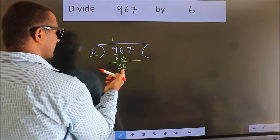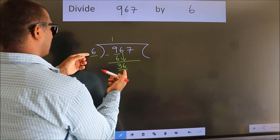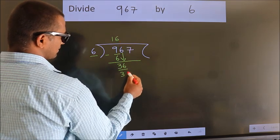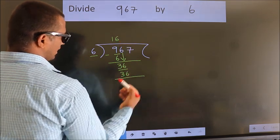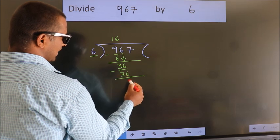When do we get 36? In the 6 table, 6 times 6, 36. Now we subtract. We get 0.